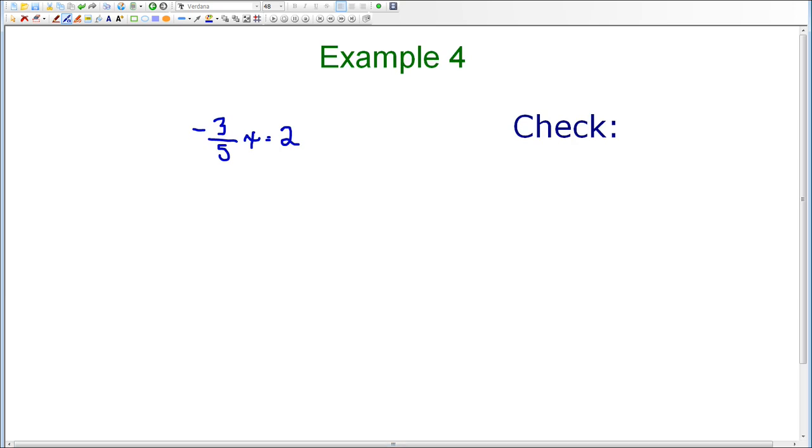Now I know that sometimes fractions really scare a lot of people, but when we think about how we're going to get x by itself, this equation is not that difficult to solve. We know that negative three-fifths x means negative three-fifths times x, so typically we would use the opposite operation in order to solve the equation. The opposite of multiplication is division.